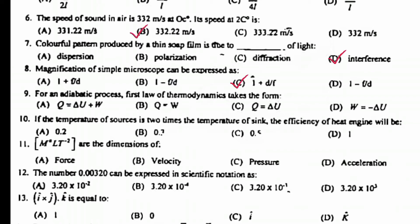For an adiabatic process, first law of thermodynamics takes the form Q equal to delta U. If the temperature of source is 2 times the temperature of sink, the efficiency of heat engine will be 0.5.